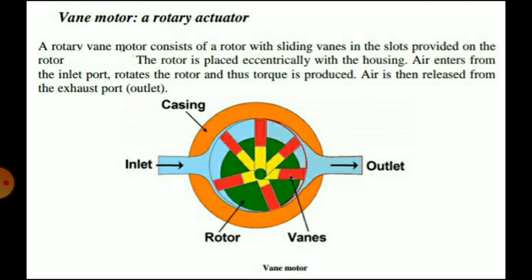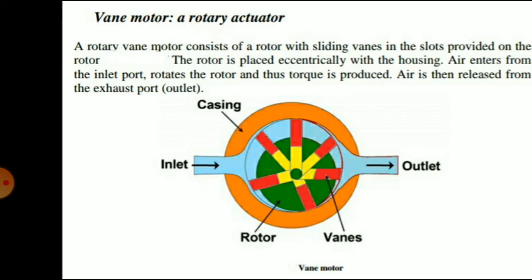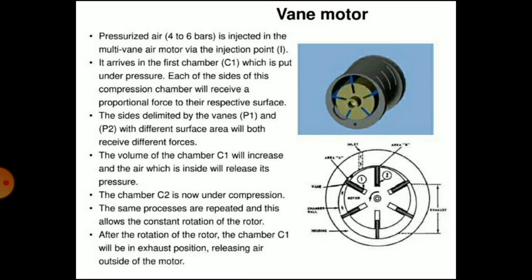A rotary vane motor consists of a rotor with sliding vanes in slots on the rotor; the rotor is placed eccentrically within the housing. Air enters from the inlet port, rotates the rotor, and torque is produced. Air is then released from the exhaust outlet port, producing rotary motion of the shaft.